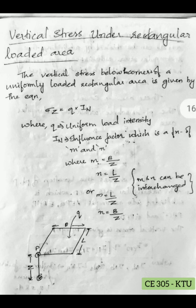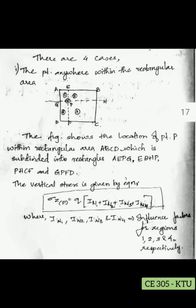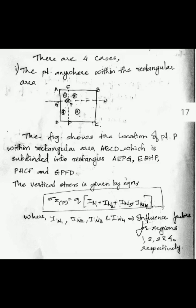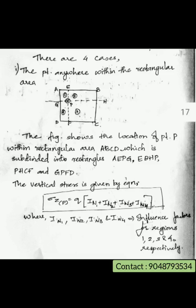There are four cases associated with this rectangular loaded area. Case one: the point of consideration P is anywhere within the rectangular area. Looking at the rectangle ABCD, we take a point P somewhere inside, and at a depth Z from point P downwards we find the vertical stress intensity. We divide the rectangle with respect to point P into four compartments: AEPG, EBHP, PHCF, and GPFD.